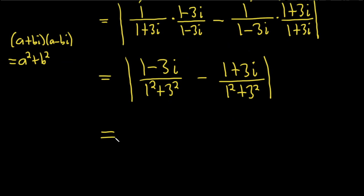So this is equal to the modulus of 1 minus 3i. This is 1 plus 9, so it's 10. So 10 minus, and then 1 plus 3i over, again, 1 plus 9, so it's 10.